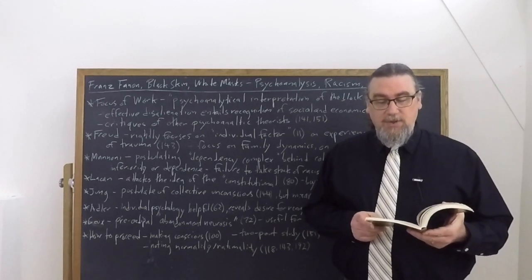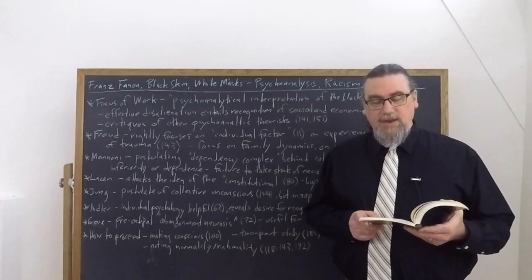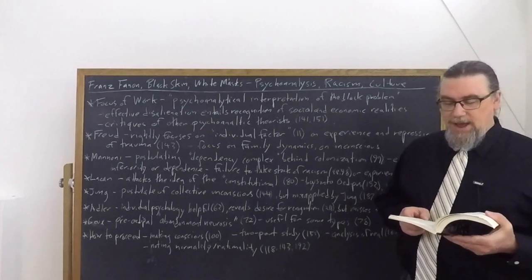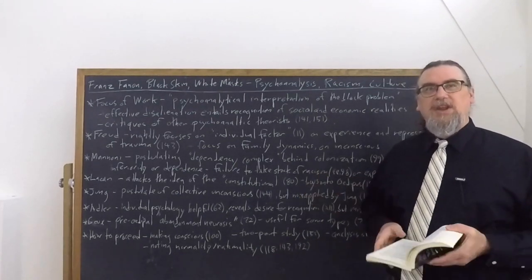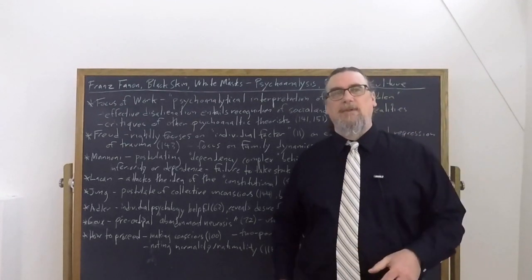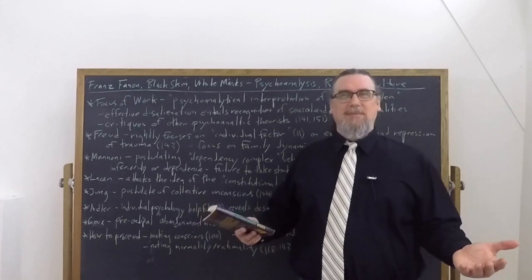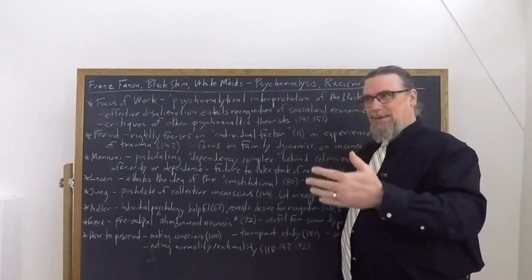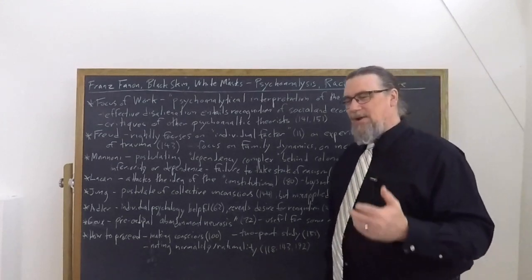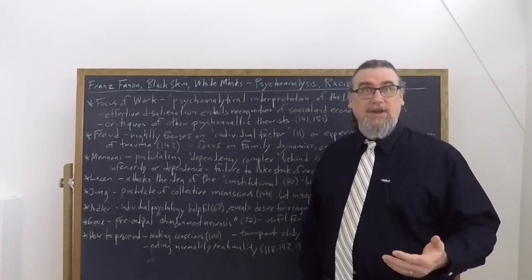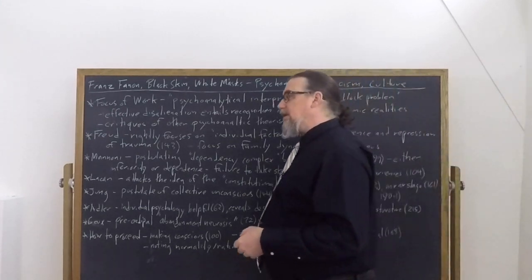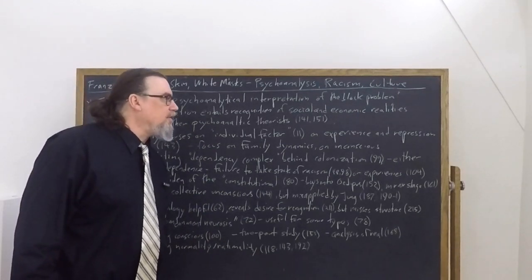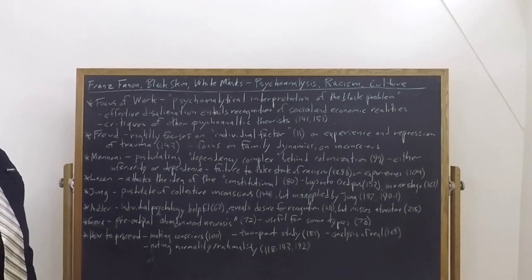He brings Jung in there as well. He says the reason I'm calling this chapter the Negro and psychopathology, well aware that Freud and Adler, and even the cosmic Jung did not think of the Negro in all their investigations. They were quite right not to have, because maybe their theories didn't apply as well. He gives us an example, the Oedipus complex, not everybody has an Oedipus complex. Freud thought everybody did, and others following after him try to generalize it.